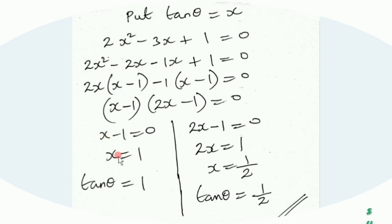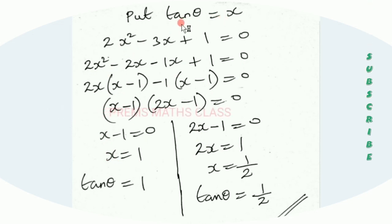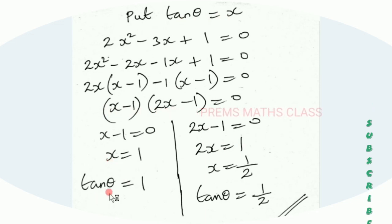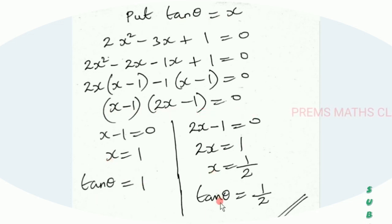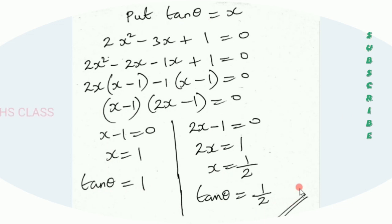So x minus 1 equal to 0 gives x equal to 1, and 2x minus 1 equal to 0 gives x equal to 1 by 2. Since x is tan theta, we have tan theta equal to 1 or tan theta equal to 1 by 2. So we proved tan theta equal to 1 and tan theta equal to 1 by 2.